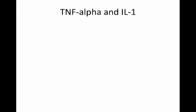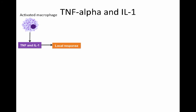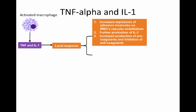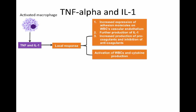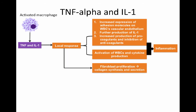Microbes, toxins, pathogen recognition by toll-like receptors, and cytokines lead to the activation of macrophages, which release large amounts of TNF-alpha and interleukin-1. TNF-alpha and interleukin-1 can induce a local response characterized by increased expression of adhesion molecules on leukocytes and vascular endothelium, further production of interleukin-1, increased production of procoagulants, and inhibition of anticoagulants. This local response is also characterized by activation of white blood cells and cytokine production, as well as fibroblast proliferation, which causes collagen synthesis and secretion, all leading to tissue repair.